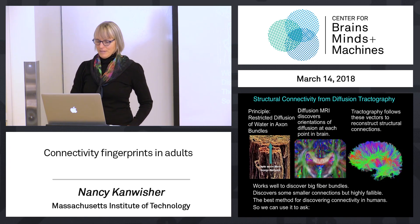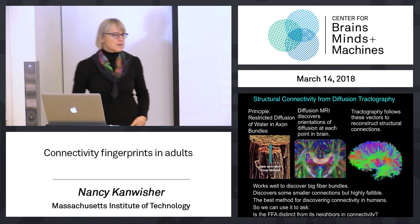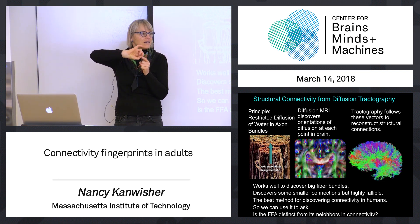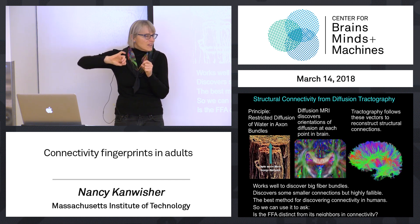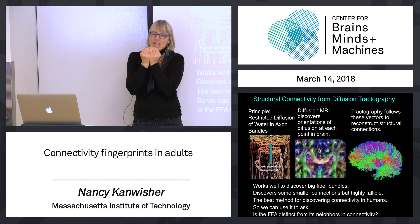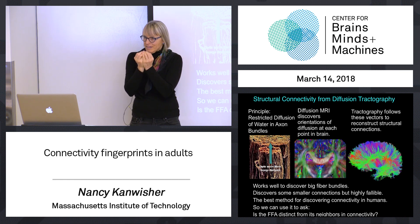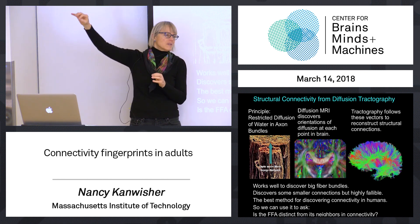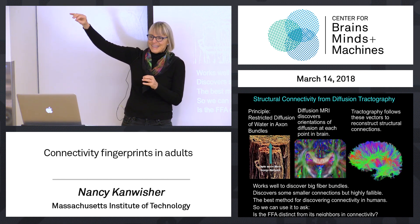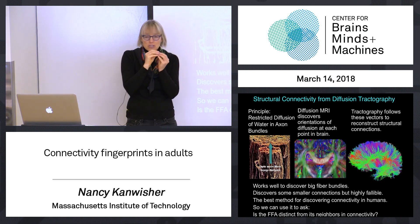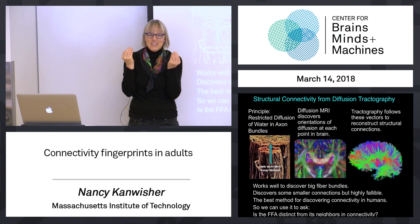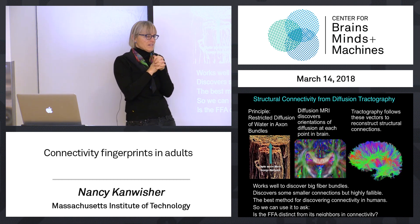We can use tractography to ask whether the long-range connectivity of the fusiform face area is distinct from the long-range connectivity of its neighbors. On the idea that that patch of cortex gets wired up to be a face area because of the connectivity to and from that region to other parts of the brain, we should predict that region has different connectivity than neighboring cortex. Otherwise, connectivity isn't enough of a signature to tell us where to put a face area.